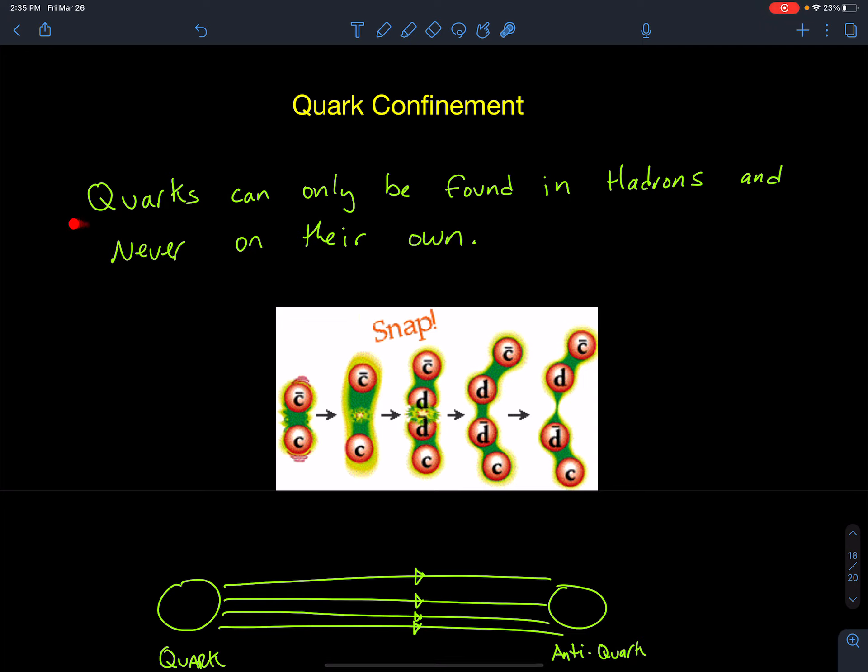So quark confinement basically states that quarks can never be found alone. They can only be found as part of particles, hadrons, mesons. They can never be on their own.